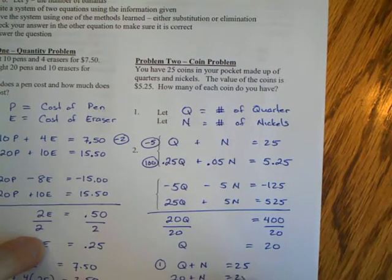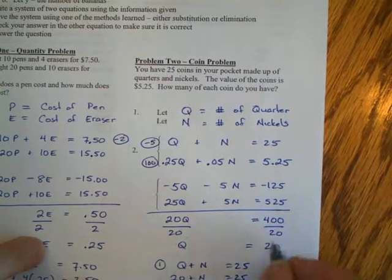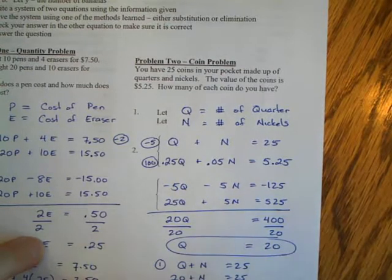So now I have to think to myself, what did Q represent? That's the number of quarters, and so you would have to say there are 20 quarters.